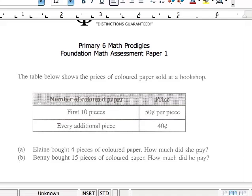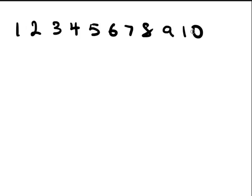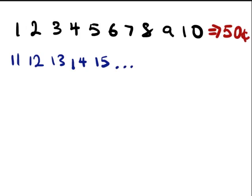So, in this case, Elaine bought four pieces of colored paper. So, I'm going to switch to my pen mode here. I'm going to draw for you in terms of what the graph said, which is first ten. That means one, two, three, four, six, seven, eight, nine, ten. How much will this cost? This will cost me 50 cents each. And anything above, in other words, 11, 12, 13, 14, 15, etc., and so on and so forth, is going to cost me how much? It's only going to cost me 40 cents.